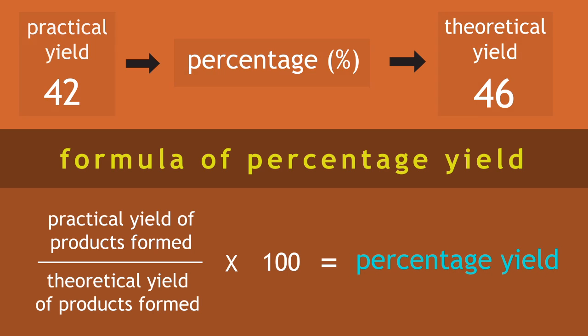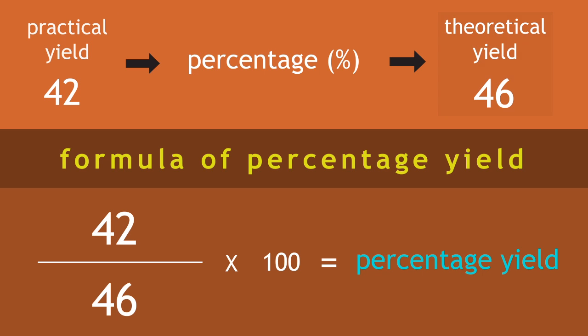Using the calculation, we do practical yield, 42, divided by theoretical yield, 46, which equals 0.913.